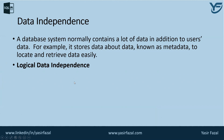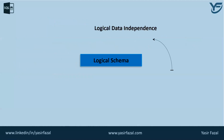Data independence is categorized into two types: logical data independence and physical data independence. When we talk about logical data independence, it applies on the logical schema. Logical data is actually the metadata — it stores information about how data is going to be managed inside the database, for example a table relation stored in the database and all its constraints that are going to be applied on that relation. Logical data independence is a mechanism which liberates itself from the actual data stored on the disk.